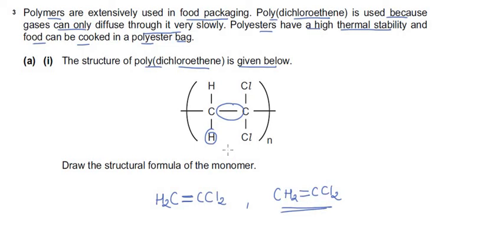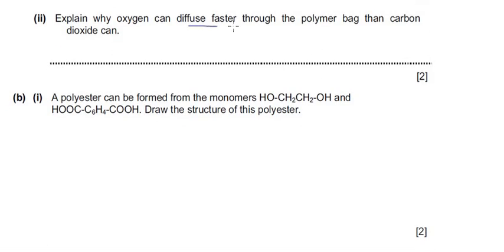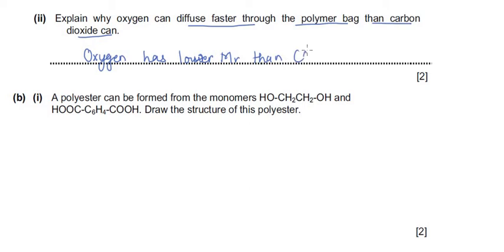The next sub-question asks why oxygen can diffuse faster through the polymer bag than carbon dioxide. The reason is that oxygen has a lower molecular mass (lower Mr) than carbon dioxide. If we simply write that oxygen is lighter, that earns only one mark since the question carries two marks. To get full marks we should state that oxygen has a lower Mr than CO2, and therefore it diffuses faster.